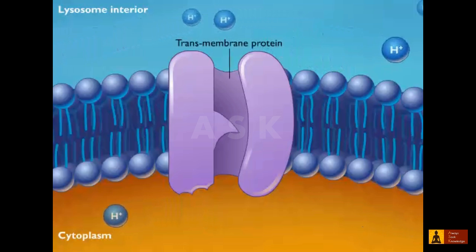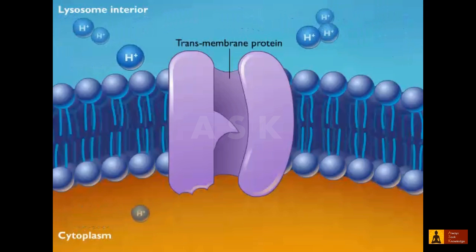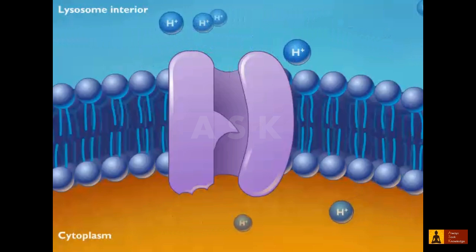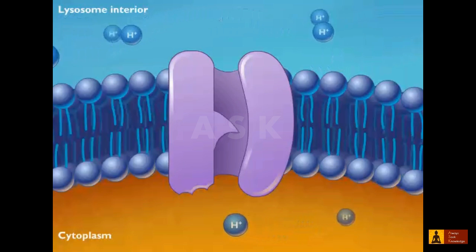For example, a proton pump can be used to maintain a 100-fold gradient between the inside of a lysosome and the cytoplasm of the cell.